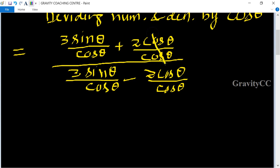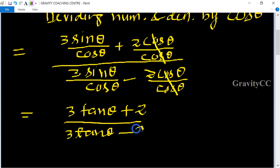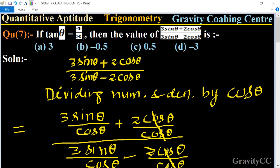Here cos cos cancel and sin by cos is equal to tan. So 3 tan theta plus 2 upon 3 tan theta minus 2. And the value of tan theta is given 4 upon 3.